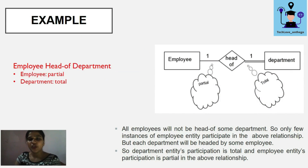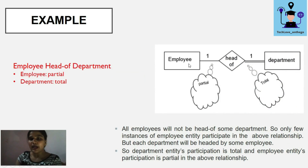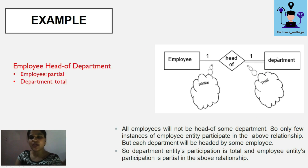Consider the example of employee and department related by 'head of.' A single line represents partial participation and a double line represents total participation. Not every employee can be the head of a department, but every department will definitely have a head who is an employee. Therefore, the department side has total participation — at least one employee must participate — while the employee side has partial participation.